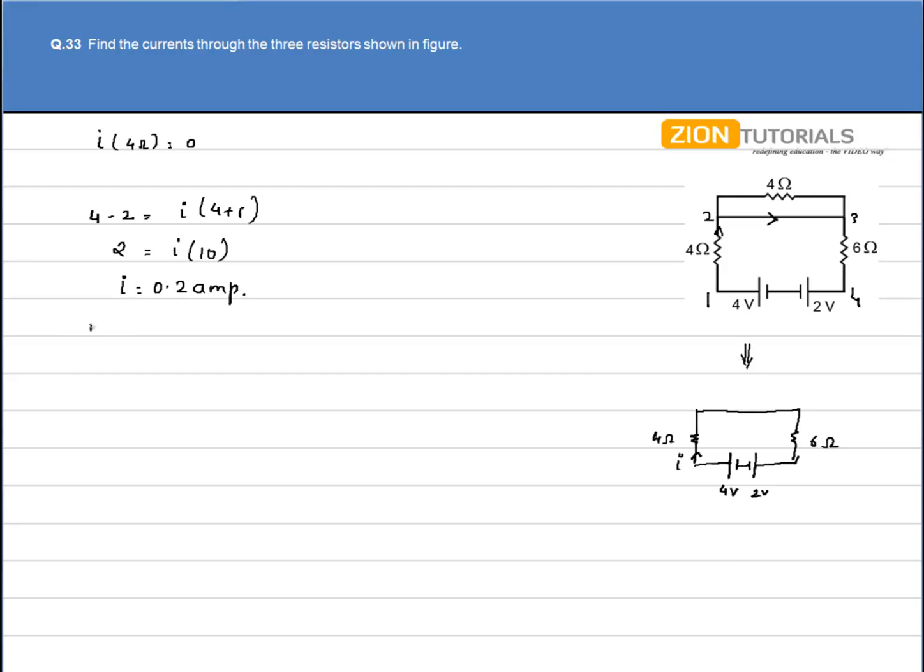So this is the current flowing through 4-ohm and 6-ohm. That is equal to 0.2 ampere. That is the answer.